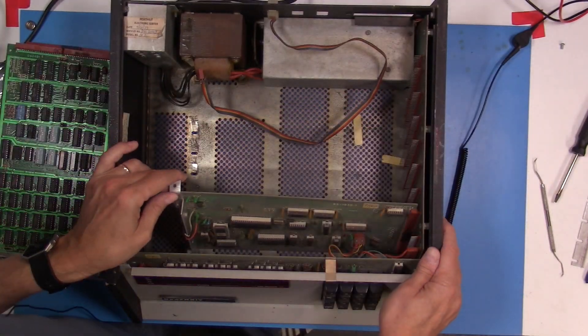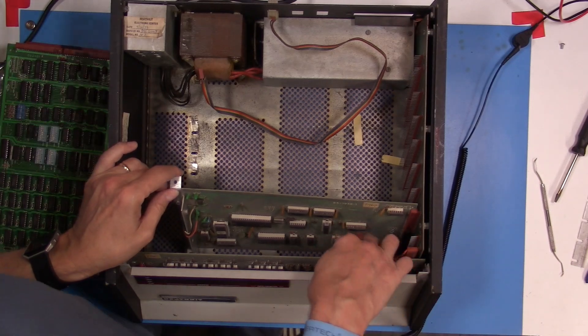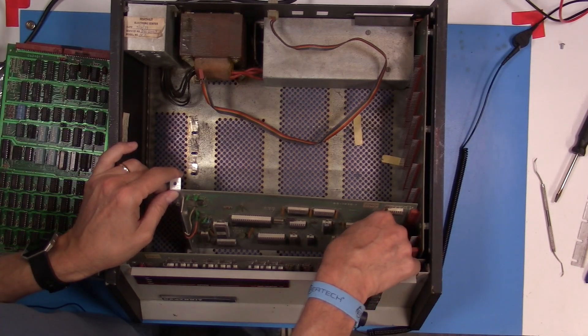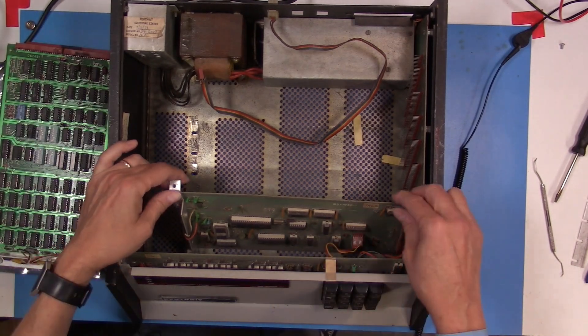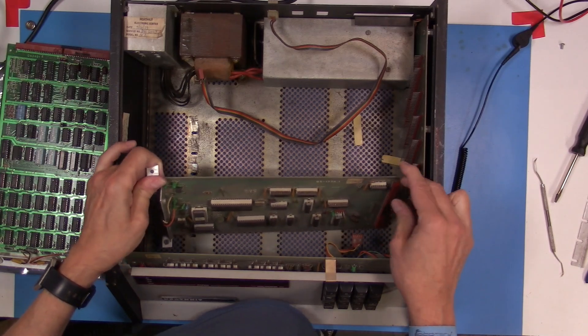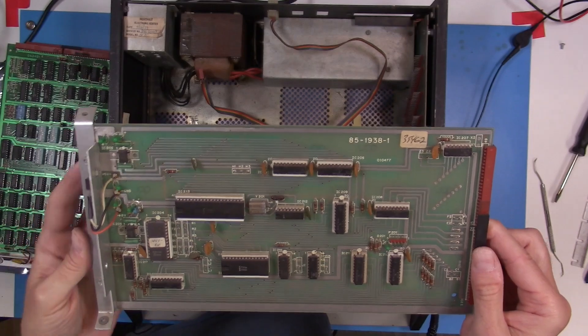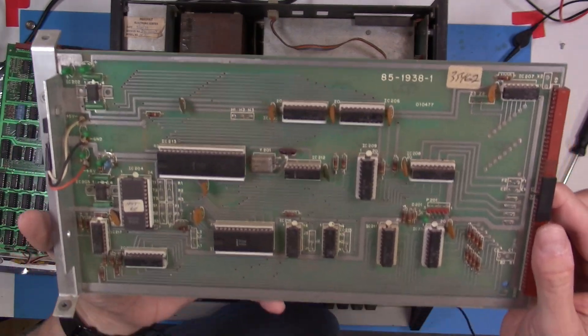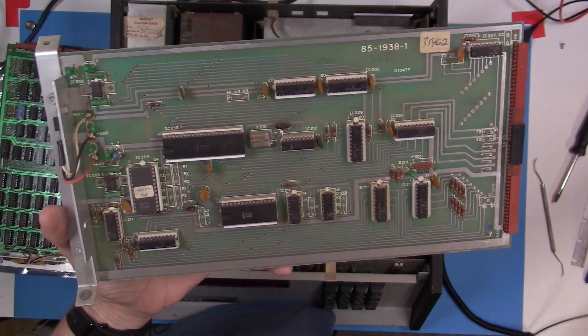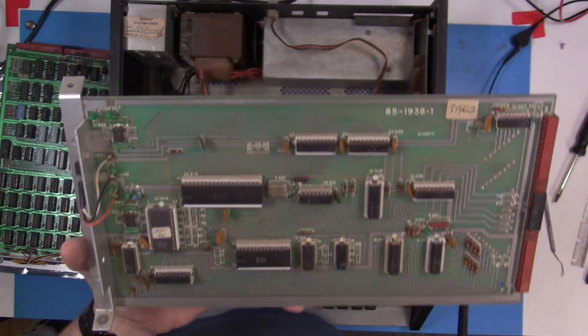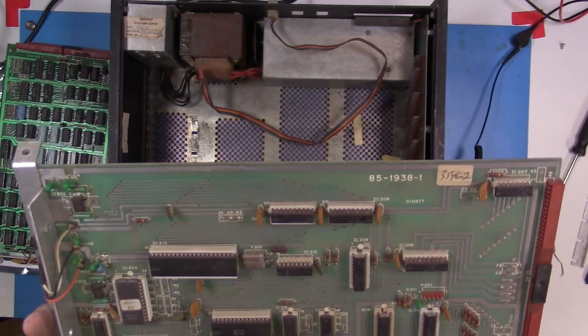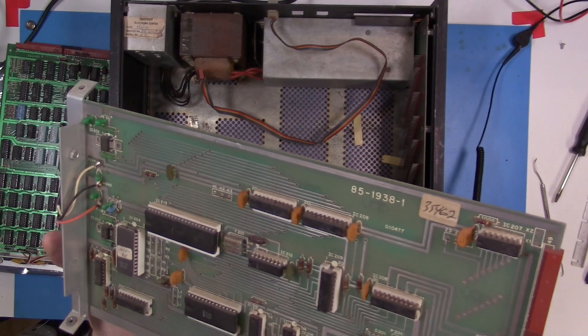And then we're going to have to get the CPU card out. And I know this one is kind of tangled up a little bit with the front panel. There's some connectors that are between the two boards. So I'm going to get that disconnected. And this is the 8080 CPU card. And this one does have some tantalum caps on it.